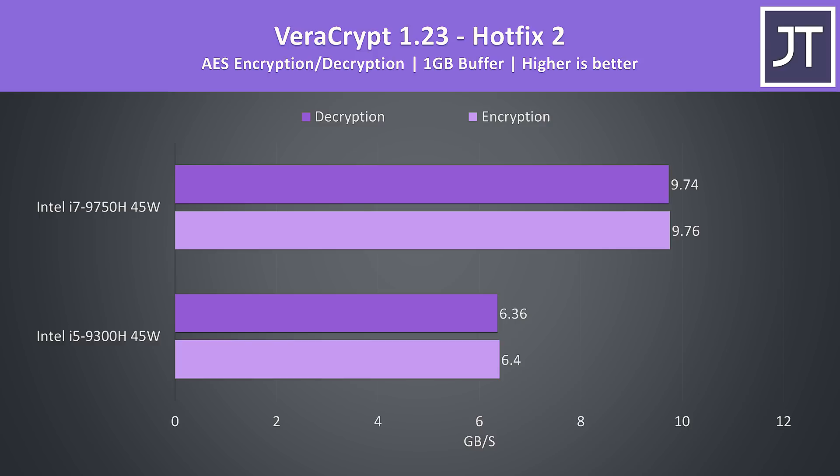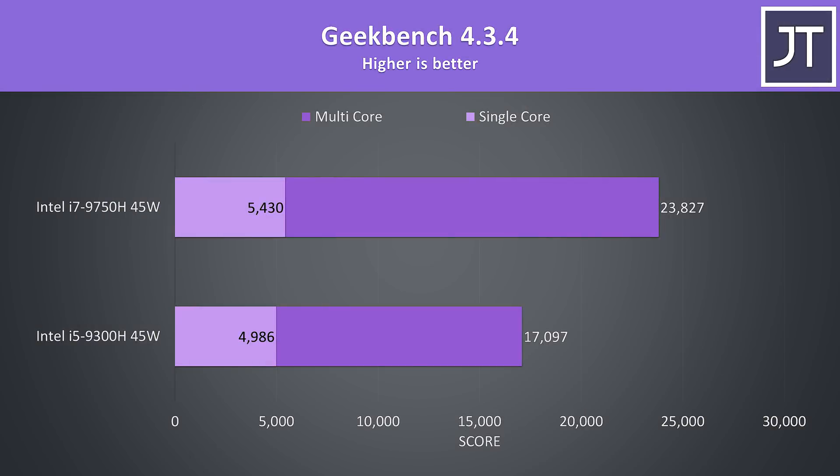Geekbench was able to score 9% faster in single core performance with the i7, and 39% faster when it came to multicore, so the workloads it runs aren't quite as core-efficient as many of those rendering tasks we saw hit 50% higher speeds.